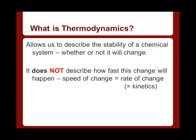Thermodynamics is a branch of chemistry that tells us about the energies involved in a reaction, and it helps us to predict the potential of a reaction. Basically, thermodynamics allows us to describe the stability of a system and whether or not it will change. It does not in any way describe how fast this change will happen or the rate of the change — that is a completely separate area. That's the realm of kinetics.